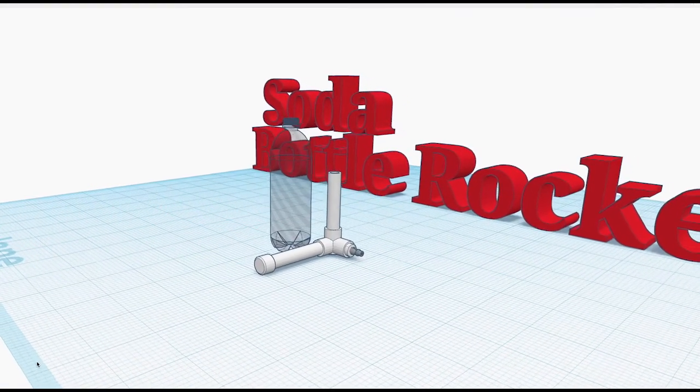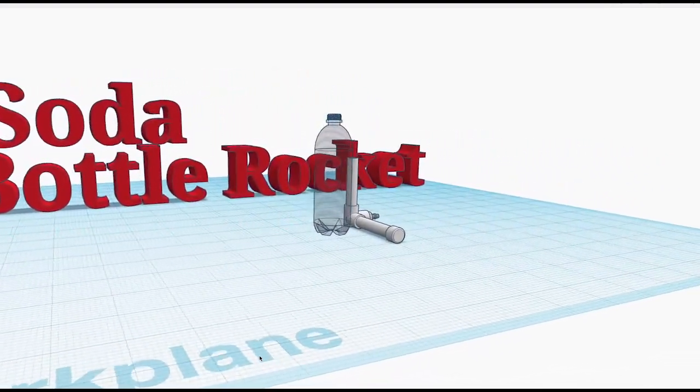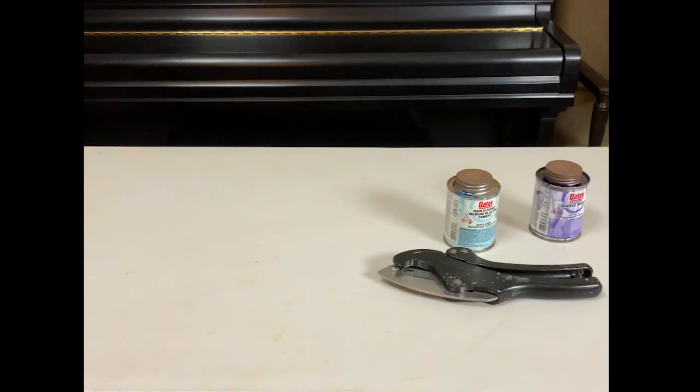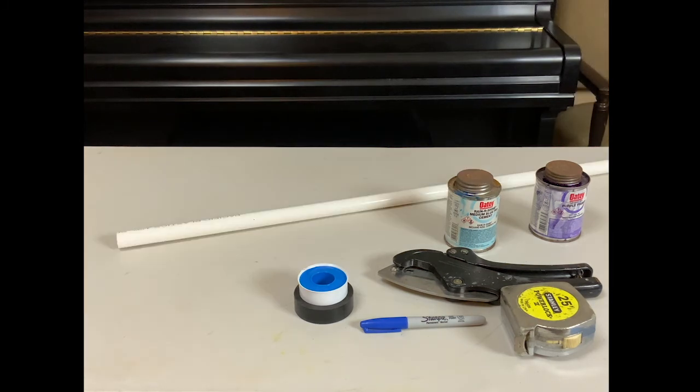Today I'm going to be building an air compressor soda bottle rocket. The tools and materials you will need are PVC primer, glue, PVC cutter, a tape measure, a marker, Teflon tape and electrical tape, and a PVC pipe.